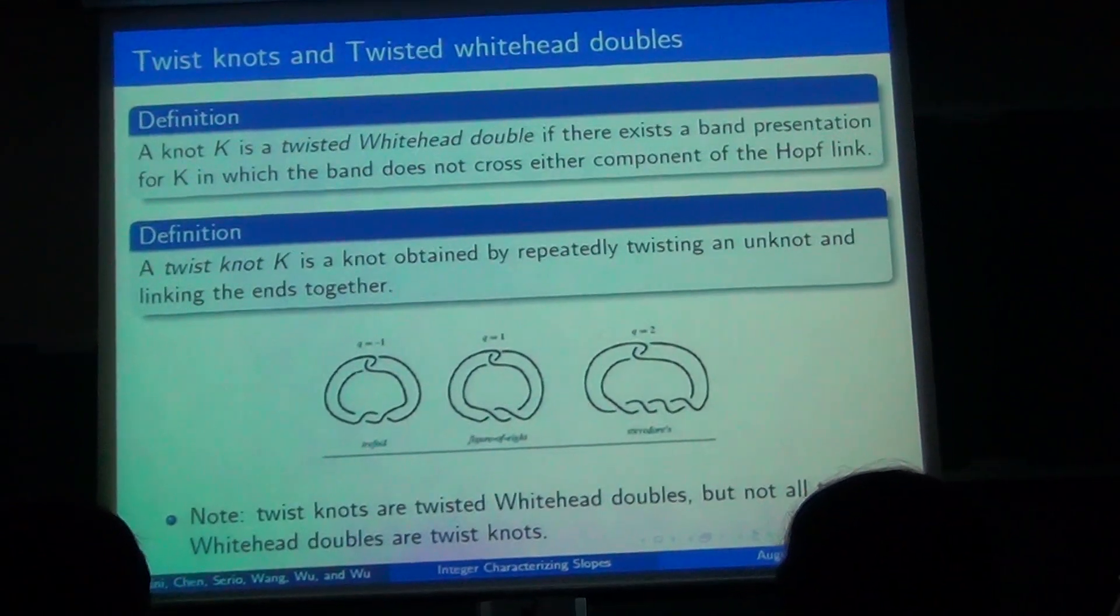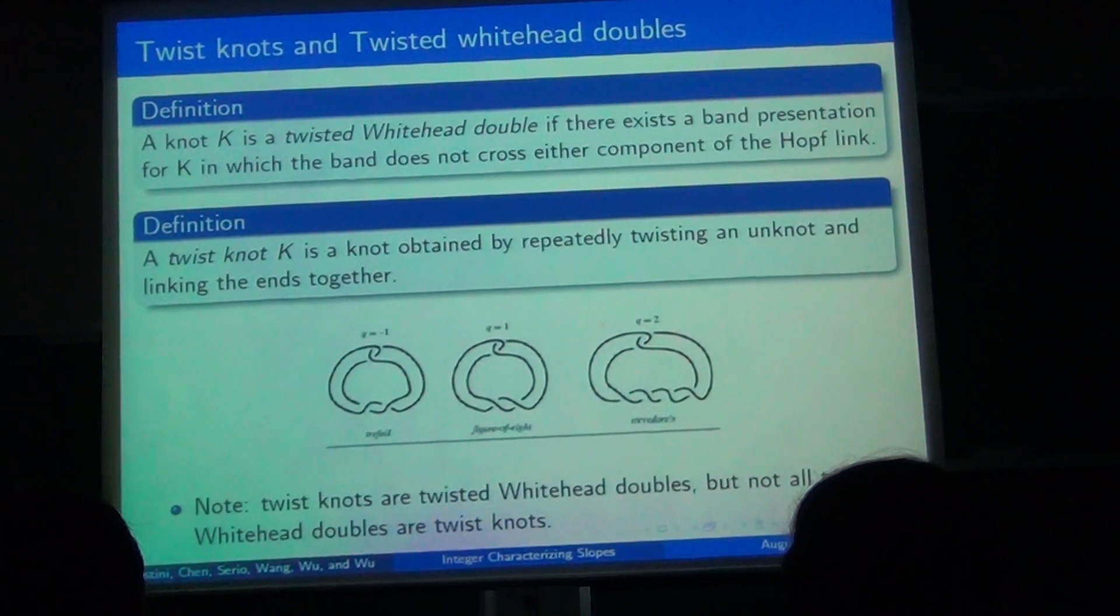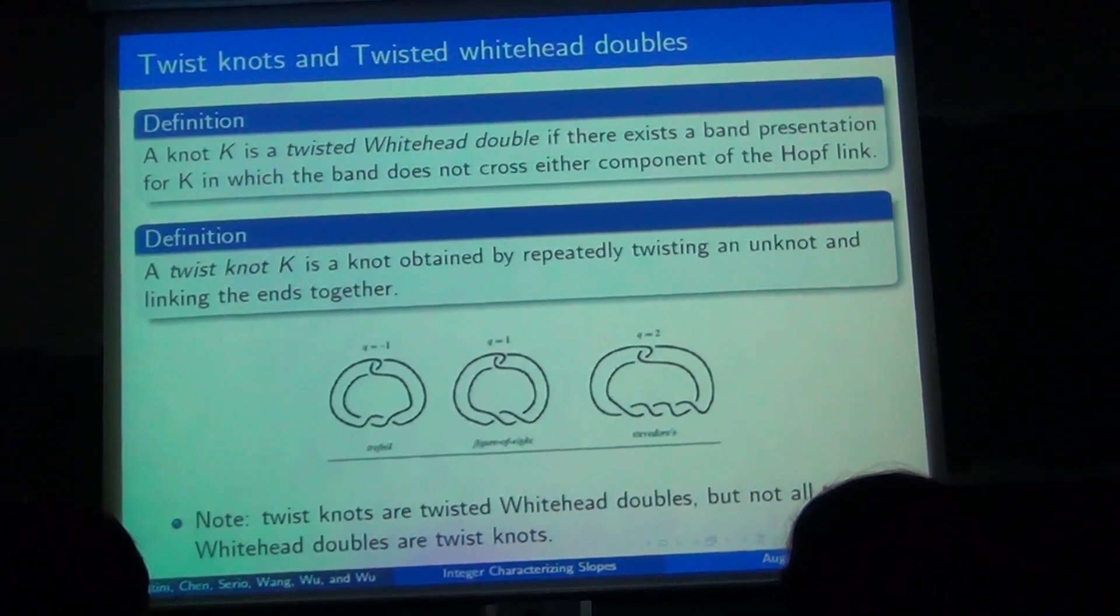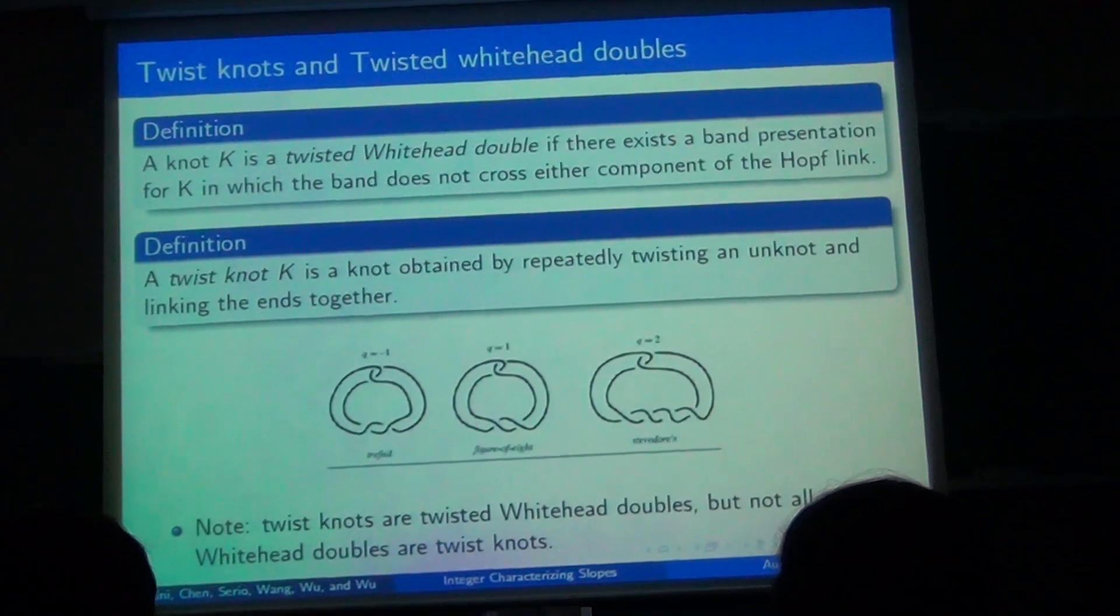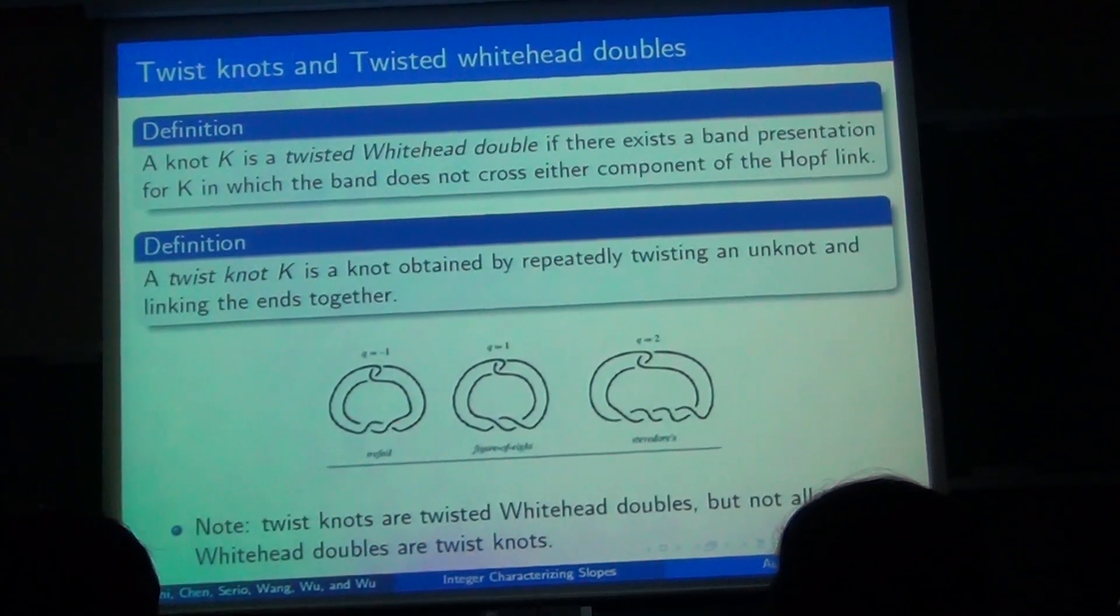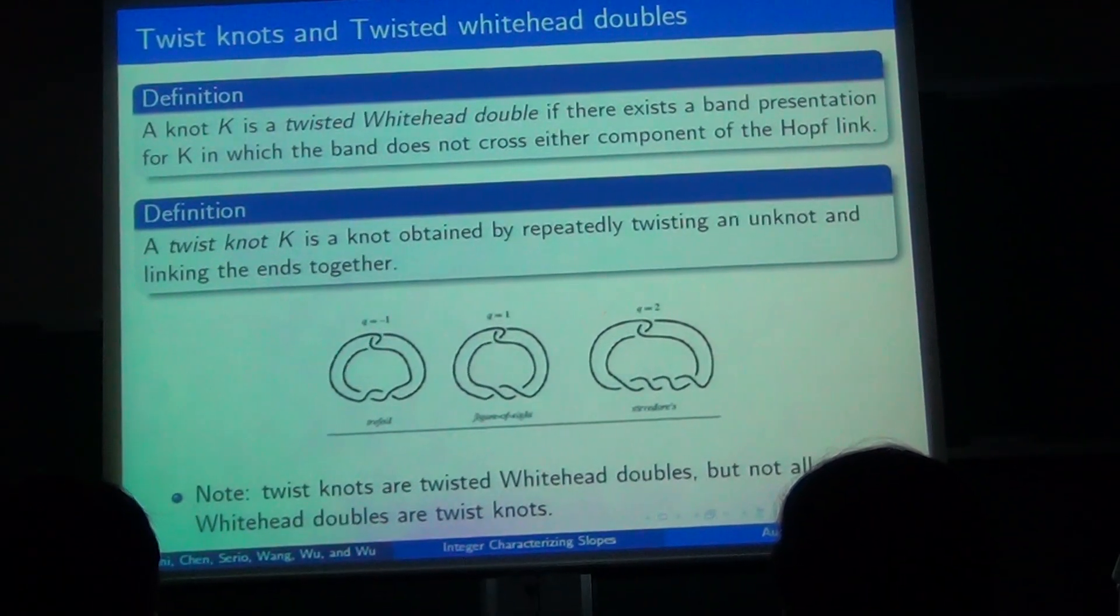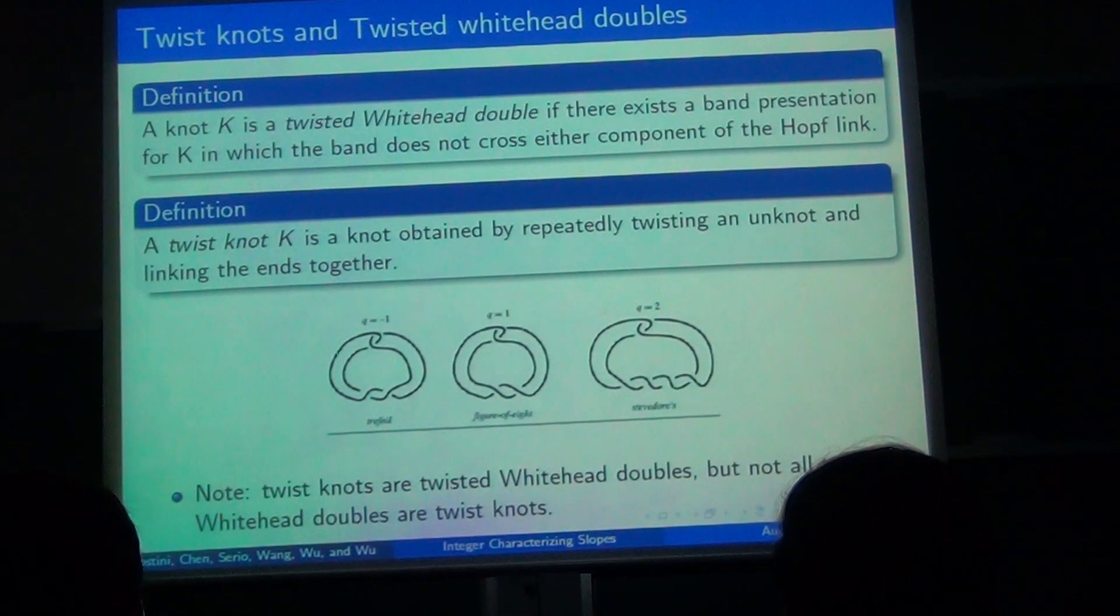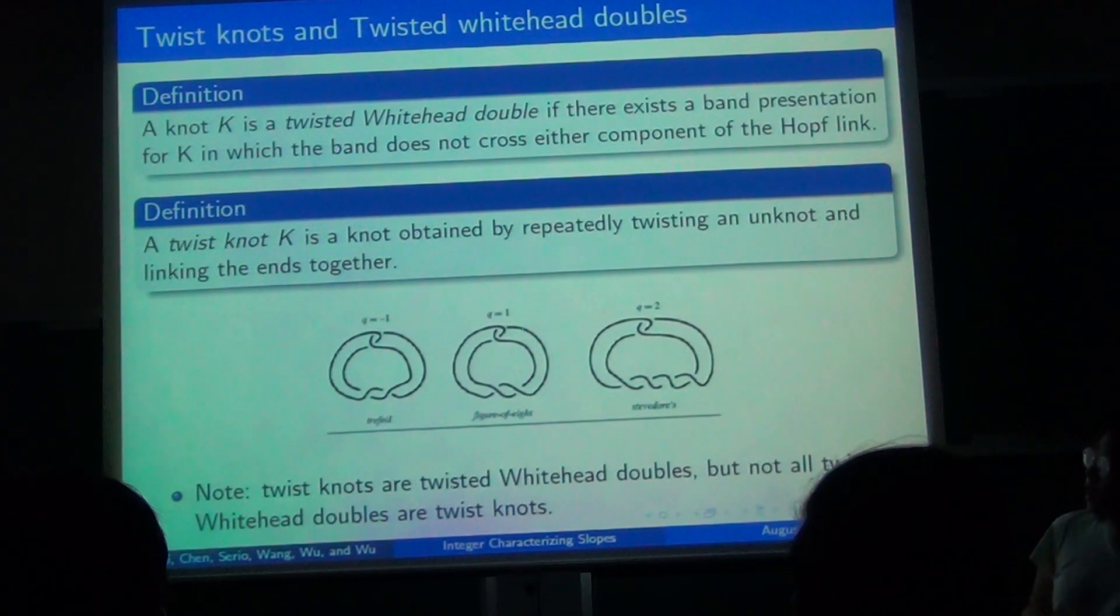We also give the definition that if knot K has a banded hoplink presentation, and the band does not cross each component of the hoplink, then we say K is a twisted double. We also define that if K can be obtained from the unknot by repeatedly twisting the unknot and linking them together, then K is a twisted knot. We give some very obvious examples of the twisted knot.